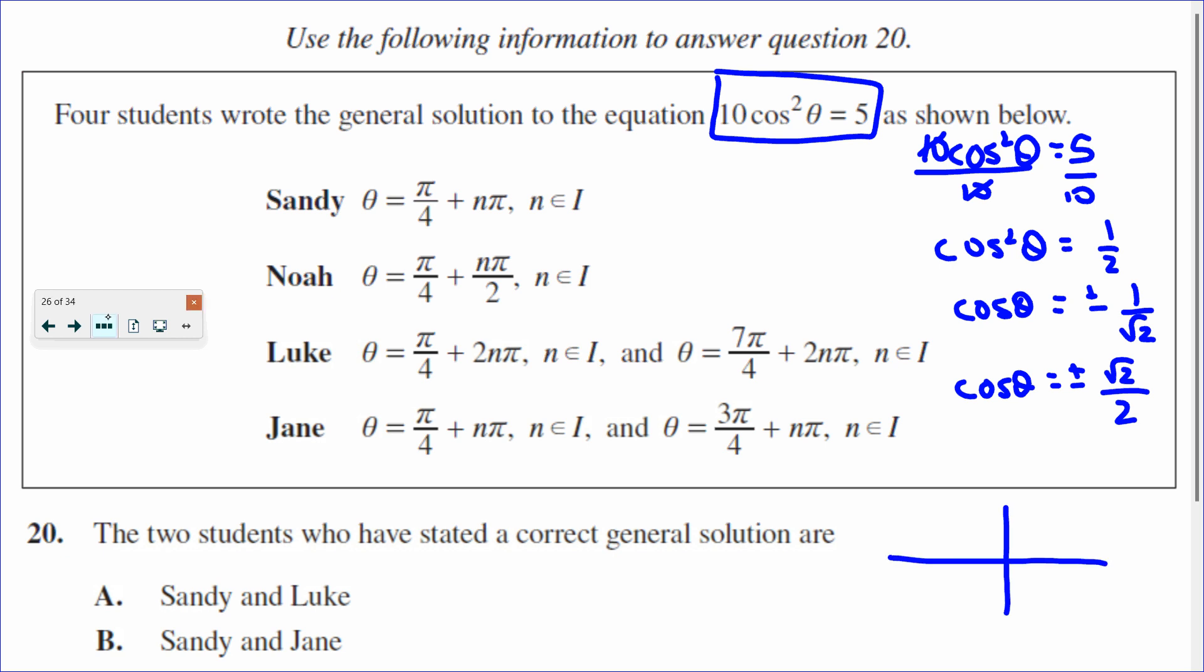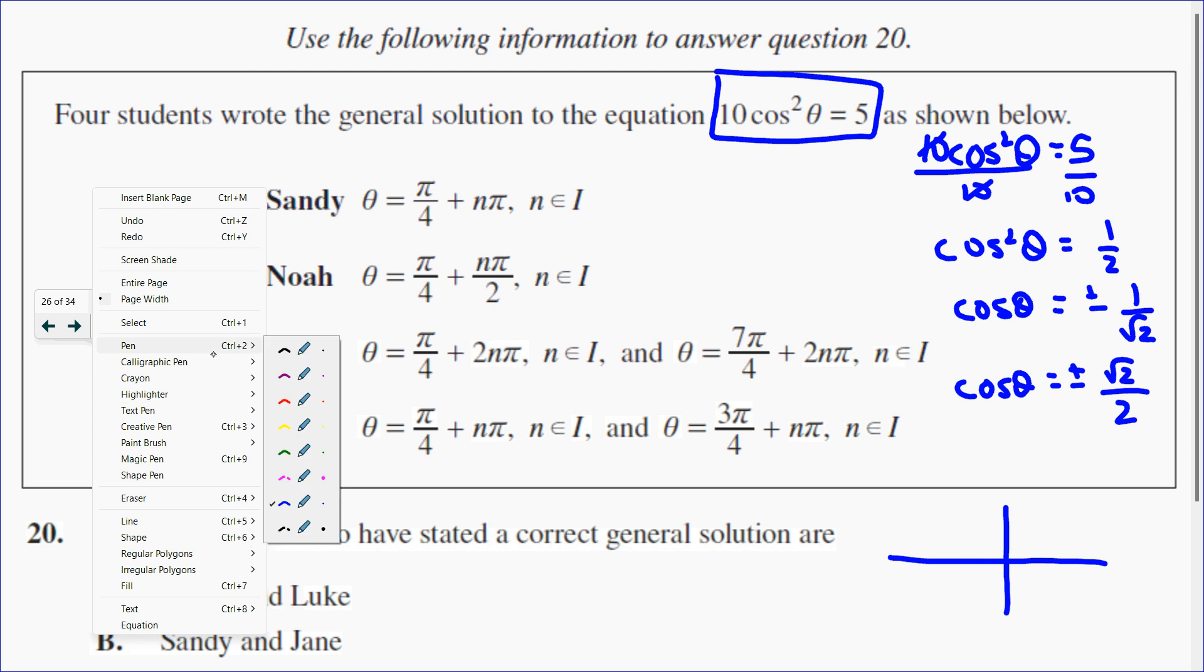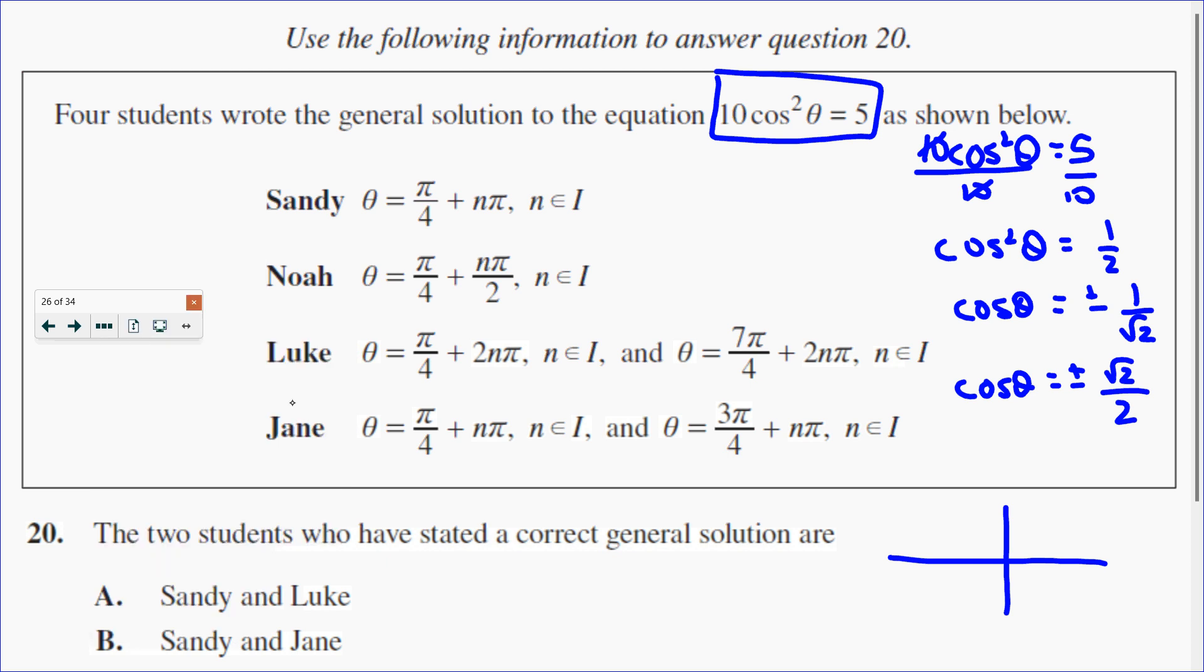So if we look at this here, I want to look at what points on the unit circle is cosine root 2 over 2. I recognize that to be 45 degrees or pi over 4.